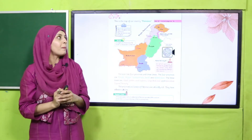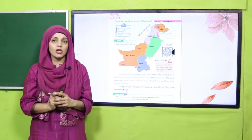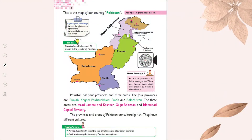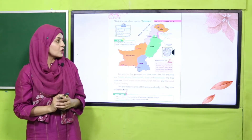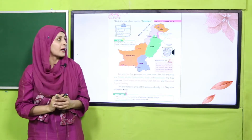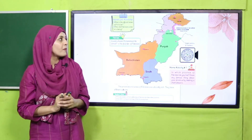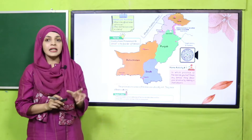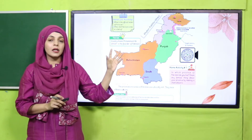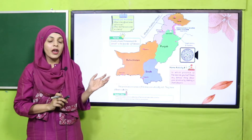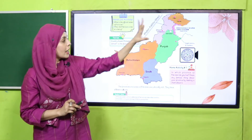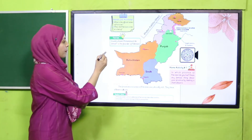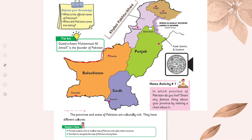Quickly open page number six in your GK2 books. Pause the video and open the page. I hope everybody has opened the page. First we will look at the map of Pakistan. You can see different colorful parts in it — orange, blue, green, purple, and yellow. The top part is also yellow. All these colorful parts are the provinces.